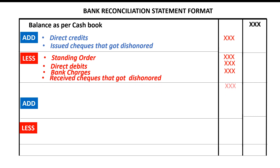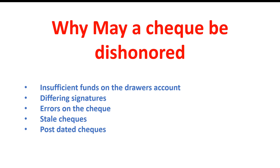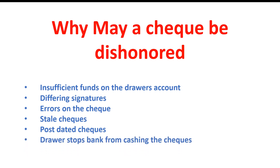Why may a check be dishonored? A check may be dishonored due to: insufficient funds on the drawer's account, differing signatures on the check, errors on the check (for example, the amount in words is not the same as the amount in figures), a stale check — checks presented to the bank six months from the date prepared become stale and are dishonored — a post-dated check, meaning it is not applicable on the date it was presented, or the drawer may stop the bank from cashing the check.